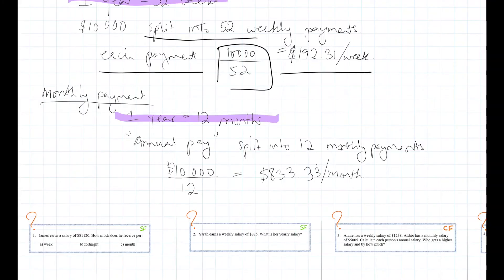So to get your monthly payments we need to split your annual pay into 12 monthly payments and we can do that by dividing 10,000 by 12 and that gives us our monthly payment of $833.33.